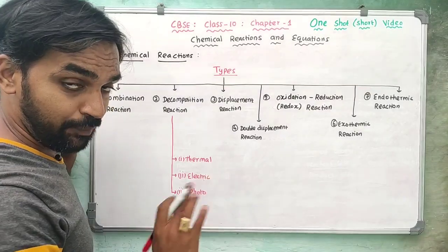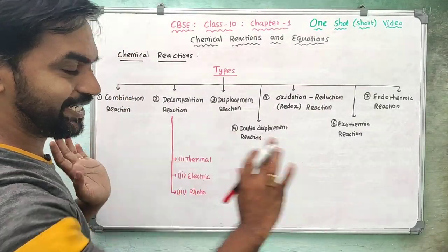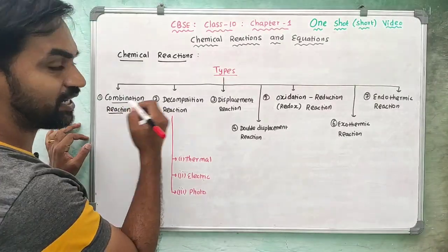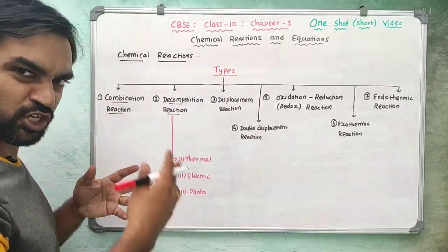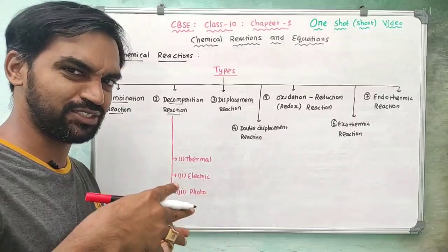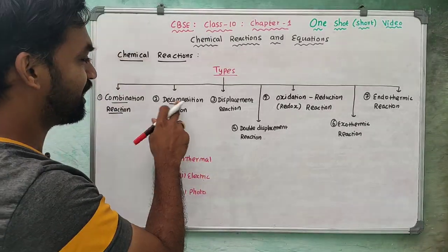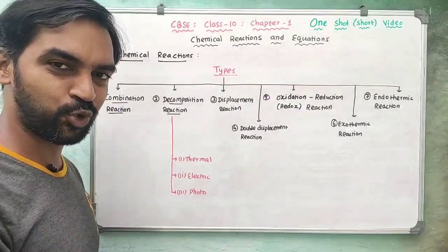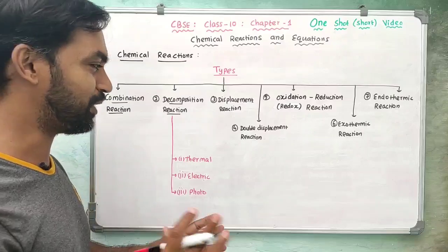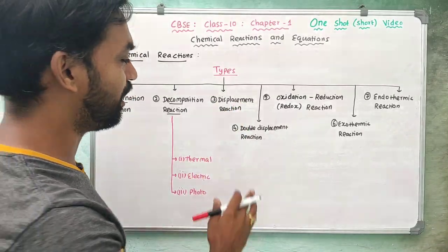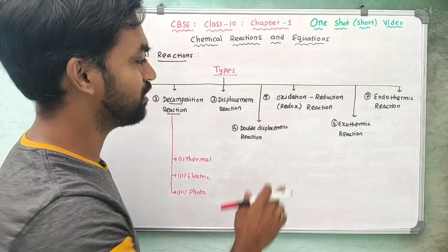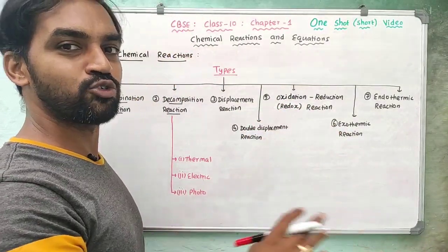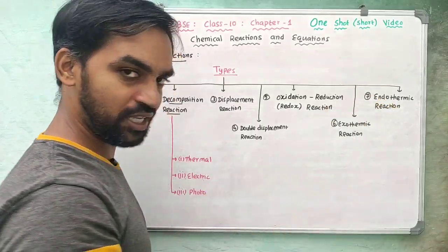Types of chemical reactions — there are 7 main types: combination reaction, decomposition reaction, displacement reaction, double displacement reaction, oxidation-reduction (redox) reaction, exothermic reaction, and endothermic reaction.